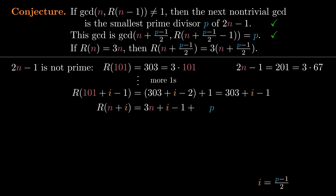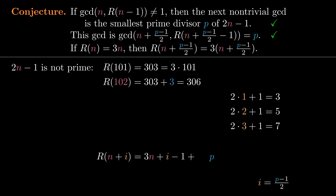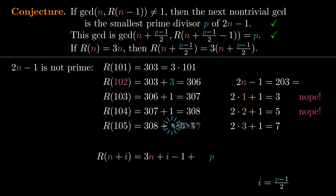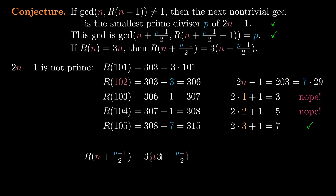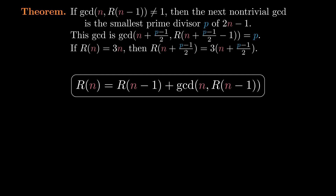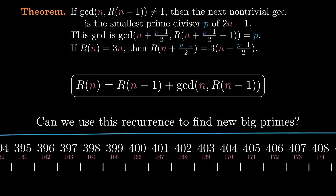So you can think about this prime-generating recurrence as performing trial division on 2n minus 1. After an index n where there's a non-trivial GCD, it starts testing odd numbers one by one looking for a divisor of 2n minus 1. Every time we compute a new term using the recurrence, if the GCD is 1, then 2n minus 1 isn't divisible by 2i plus 1, so it tries the next odd number and so on until it finds one that divides 2n minus 1. The first such number will be the smallest prime divisor of 2n minus 1. The third part of the conjecture follows from the same algebra as the prime case. So this conjecture is a theorem: this recurrence generates primes, and the proof uses nothing fancy — just basic properties of divisibility. Can we use this recurrence to find new big primes? If you haven't seen my previous video about this sequence, you'll find the answer there.